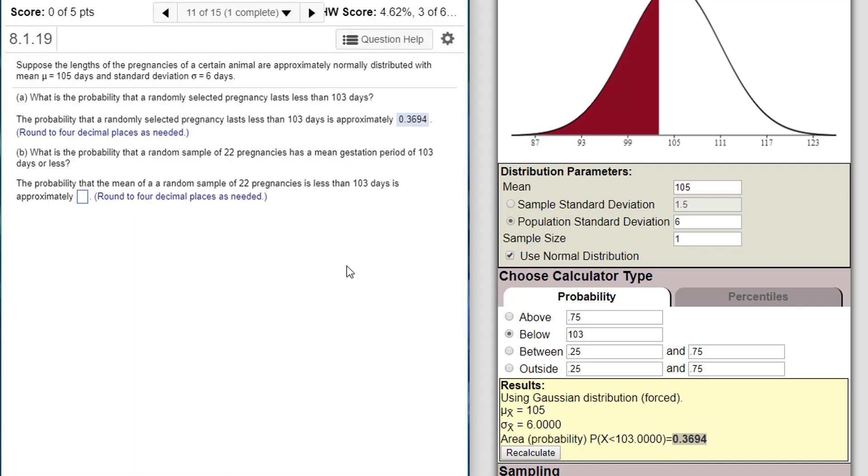Now what is the probability that a random sample of 22 pregnancies has a mean less than 103 days? Okay, if I change the sample size to 22, it's going to change the distribution and you're going to see at less than 103 it's a lot smaller of a proportion of the curve. The probability is now down to 0.0590 and that's it. I don't have to do any calculation.